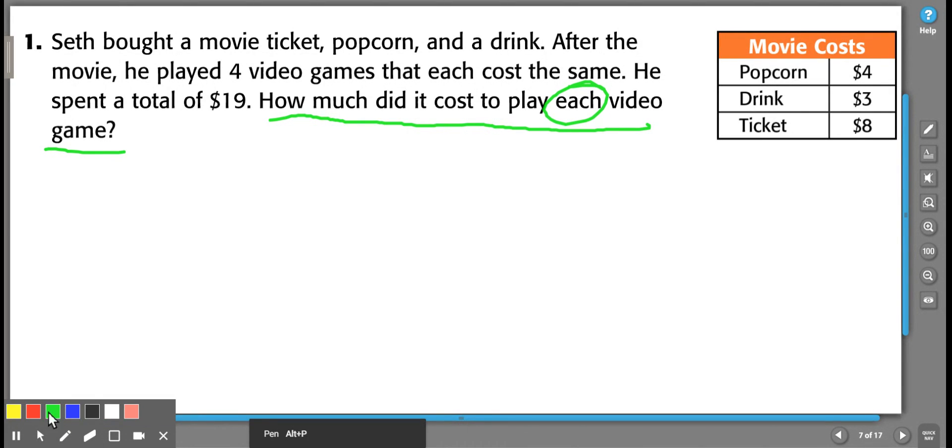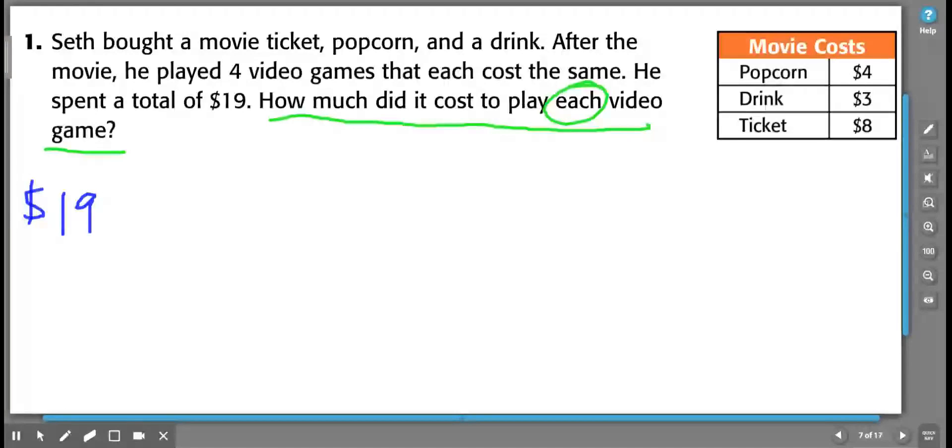Okay, so if I want to solve this, I know that Seth started off with $19. He had $19. And then he bought a movie ticket, popcorn, and a drink, which are all represented over here in this chart. So popcorn's $4, drink is $3, ticket was $8.